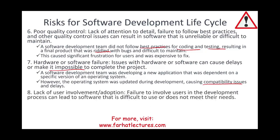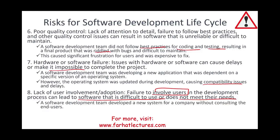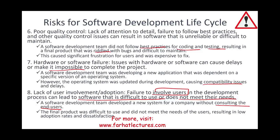One of the most important risks is lack of user involvement or adoption. Failure to involve users in the development process can lead to software that is difficult to use or does not meet their needs, creating challenges with adoption. For example, a software development team developed a new system without consulting end users, and the final product was difficult to use and did not meet user needs, resulting in a low adoption rate and dissatisfied customers.